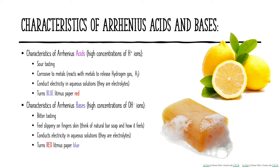Another way we can identify whether something is an Arrhenius acid or base is through some characteristics. Arrhenius acid solutions have high or relatively high concentrations of hydrogen or hydronium ions. They tend to have a sour taste — you can't taste every acid because you could injure yourself, but lemons, which contain citric acid, have a sour taste. They also tend to be corrosive to metals, reacting with metals and releasing hydrogen gas. You could actually dissolve a metal with enough of a strong acid.